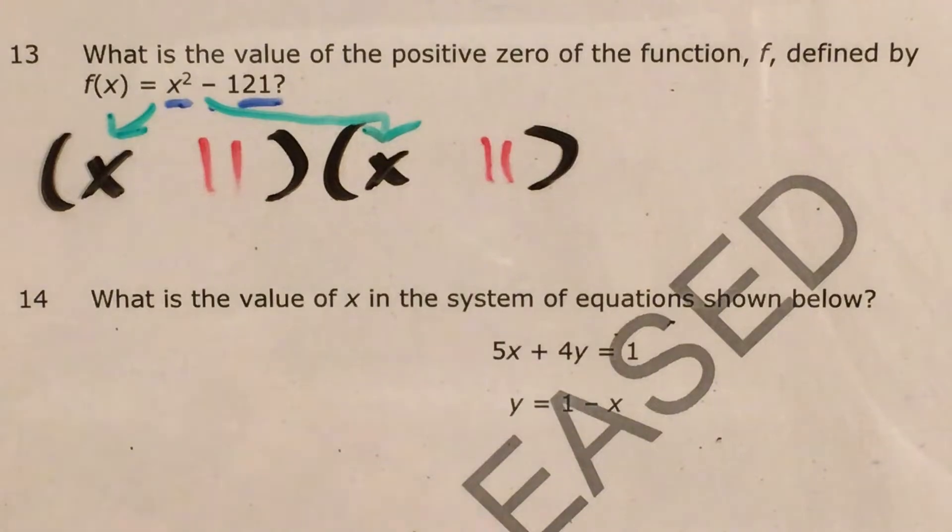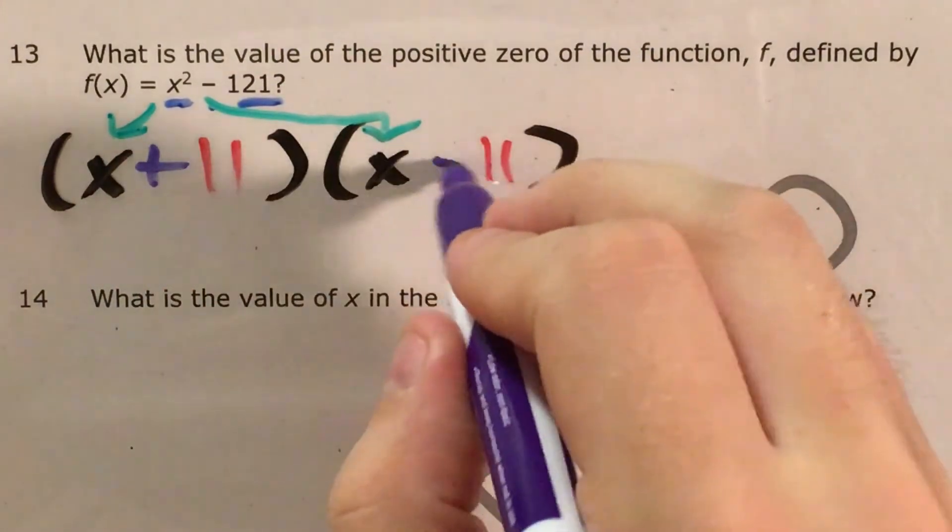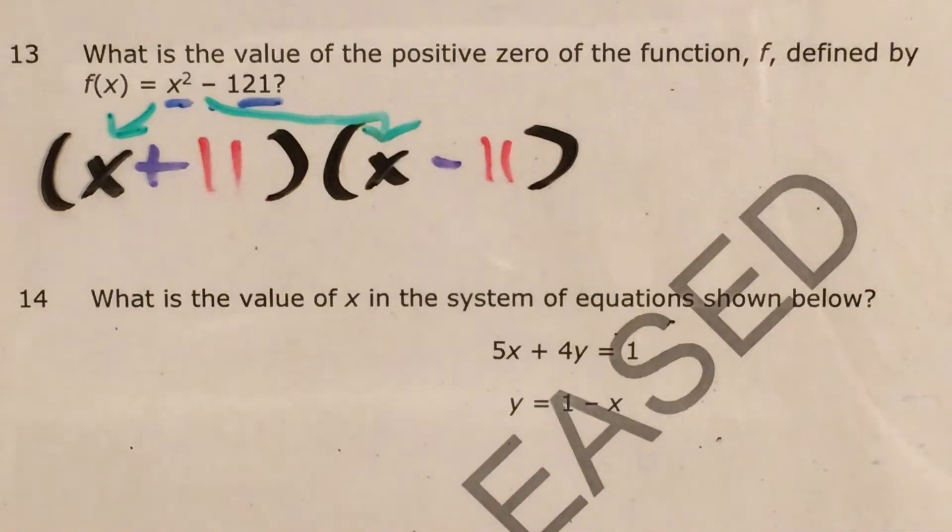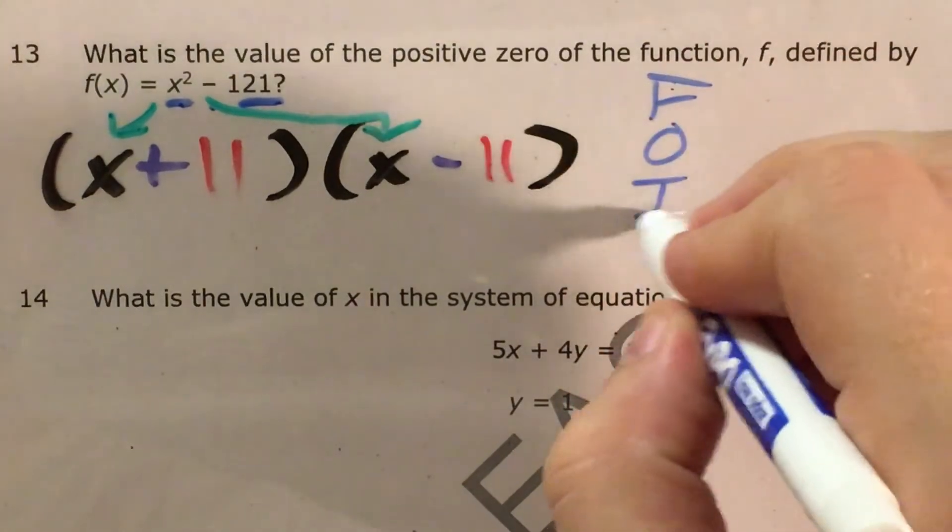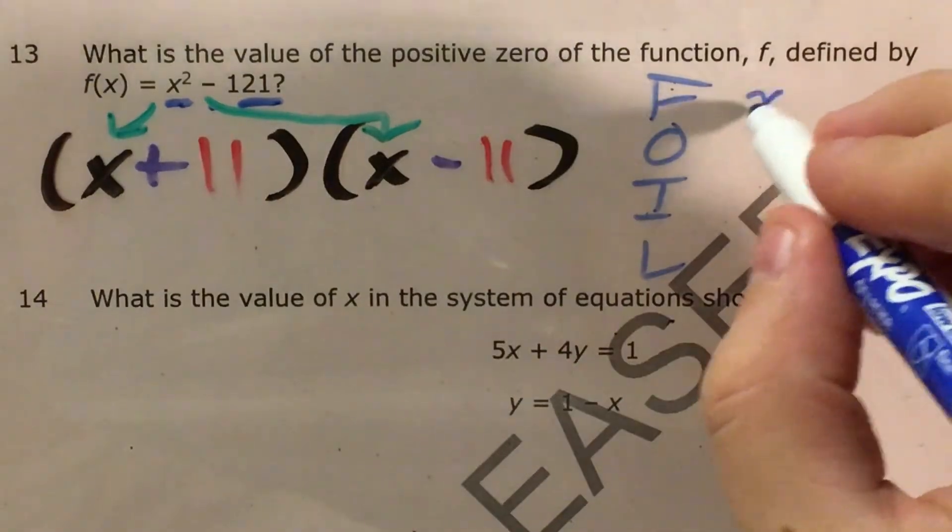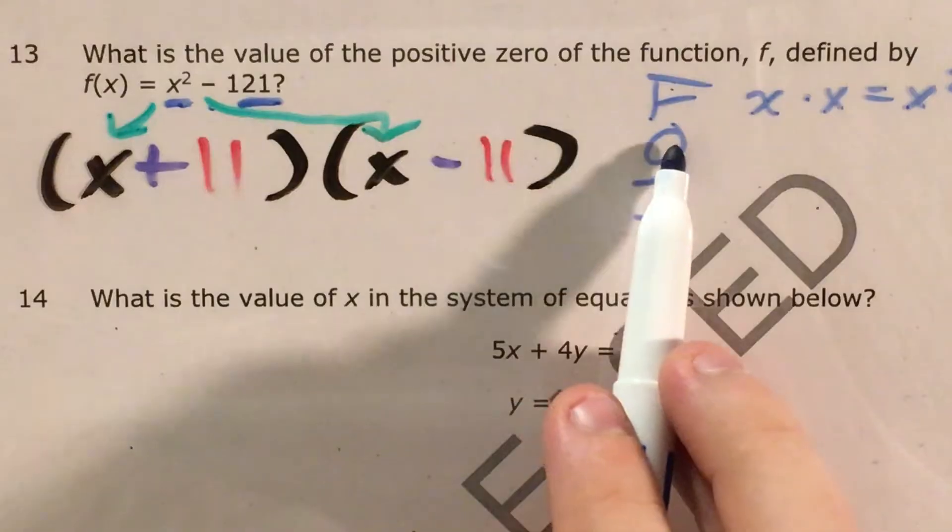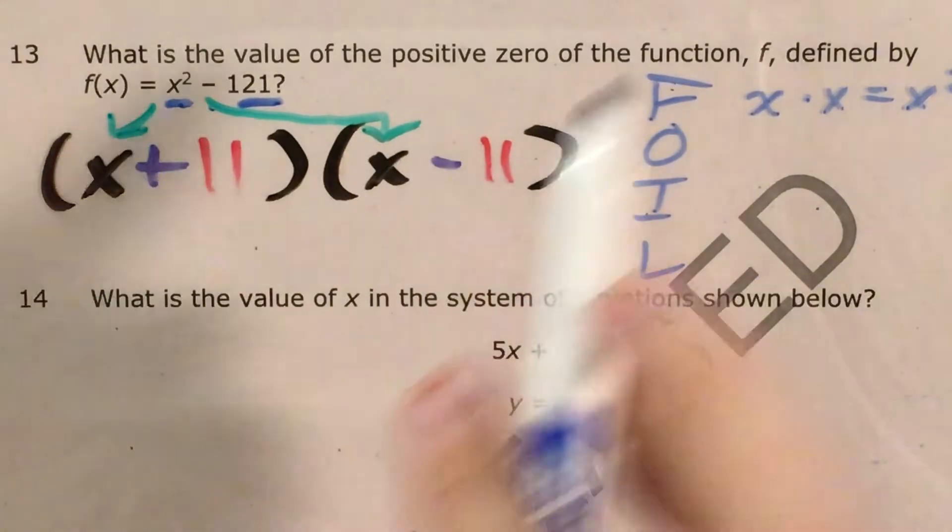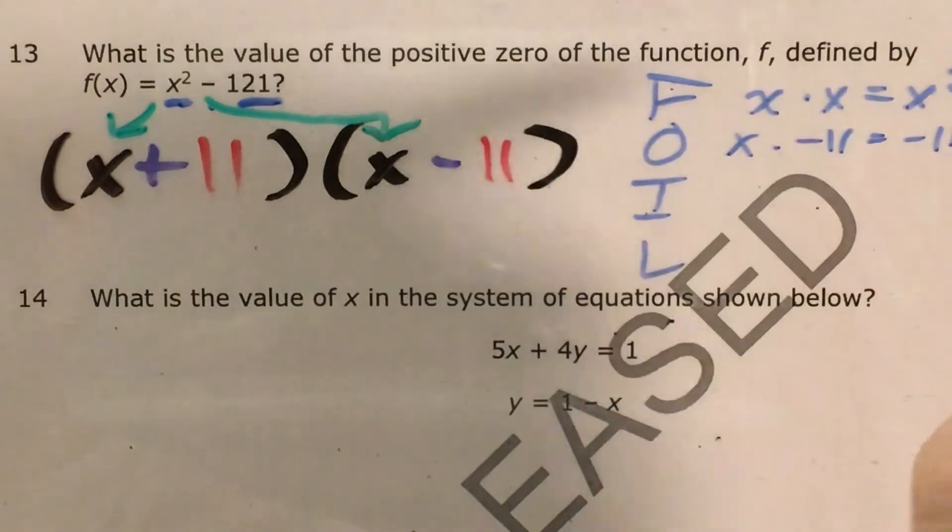And just for the sake of demonstrating this, if I were to go ahead and reverse this process by foiling, my first numbers, x times x, would give me x squared. My outside numbers, x times minus 11, would give me negative 11x.